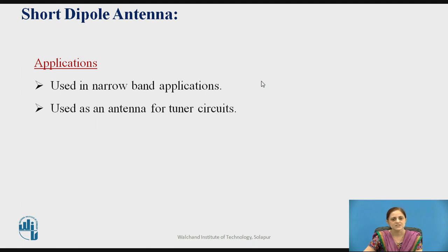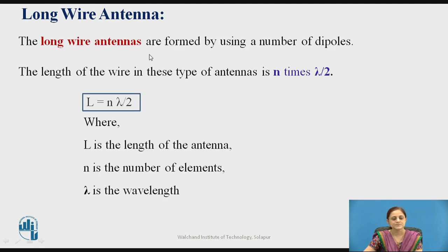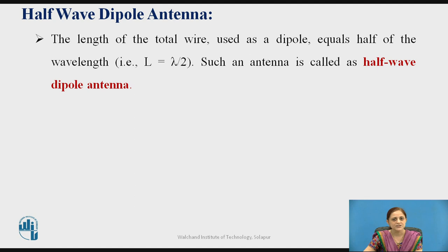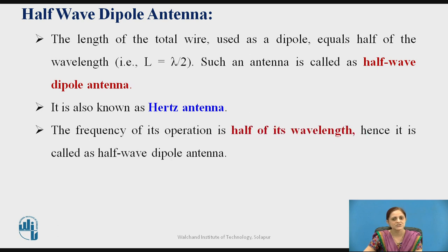Applications of short dipole antenna include narrow band applications and use as an antenna for tuner circuits. For long wire antennas, multiple dipoles are connected to each other. The length equals n times lambda divided by 2, where n is the number of elements and lambda is the wavelength. When the total wire length equals half the wavelength, it is known as a half wave dipole antenna, also called the hertz antenna. Its operating frequency corresponds to half its wavelength, hence it is called a half wave dipole antenna.